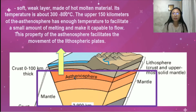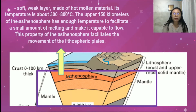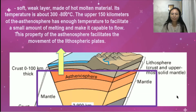The magma exhibits the property of a liquid, which is flowing. When the magma in the mantle flows, the lithospheric plates above it will also flow in the direction of the movement of the magma. Detailed discussion will follow regarding the directions of the plates' movement.